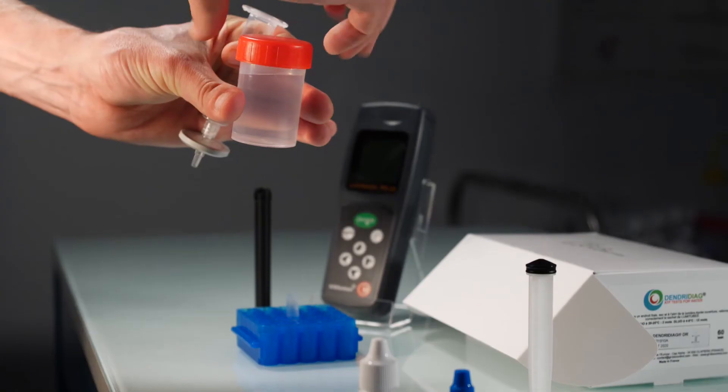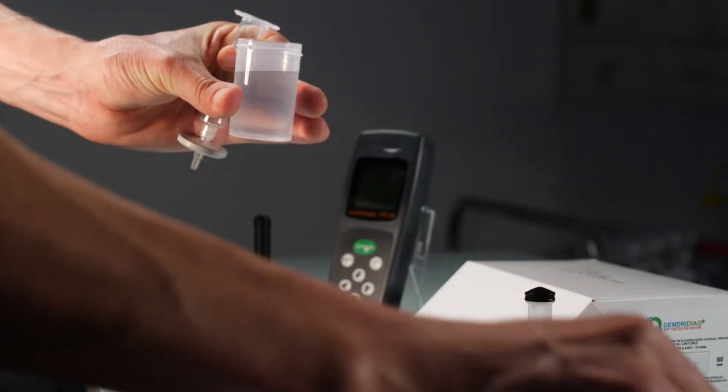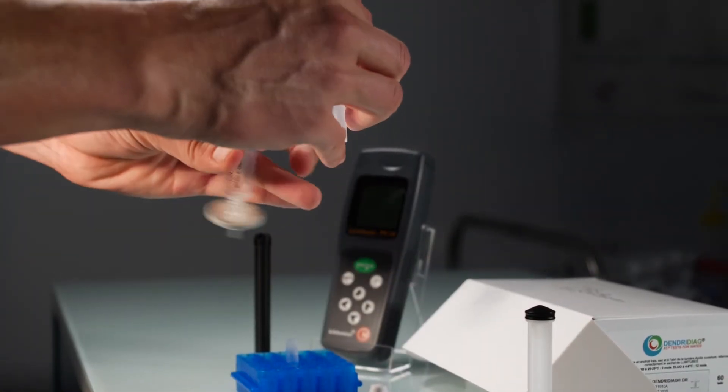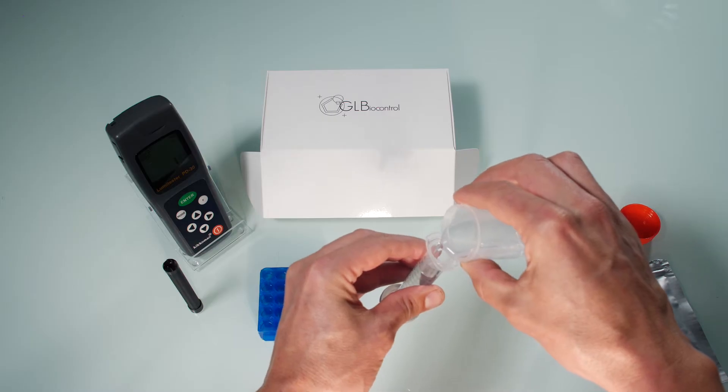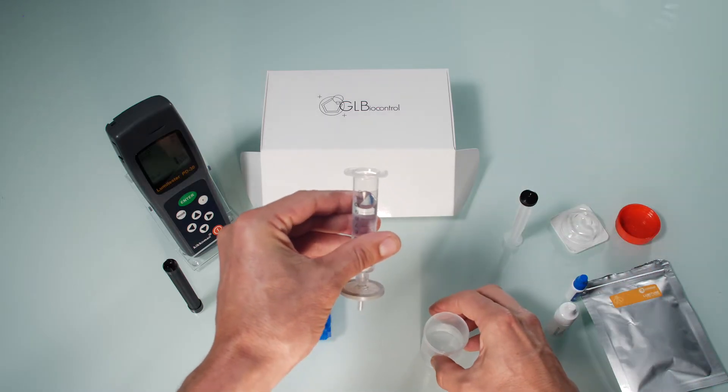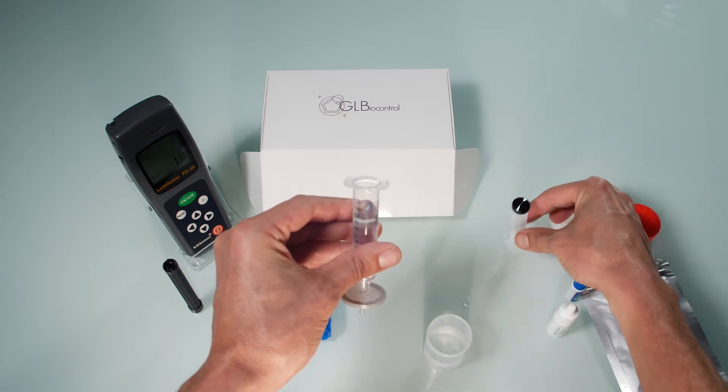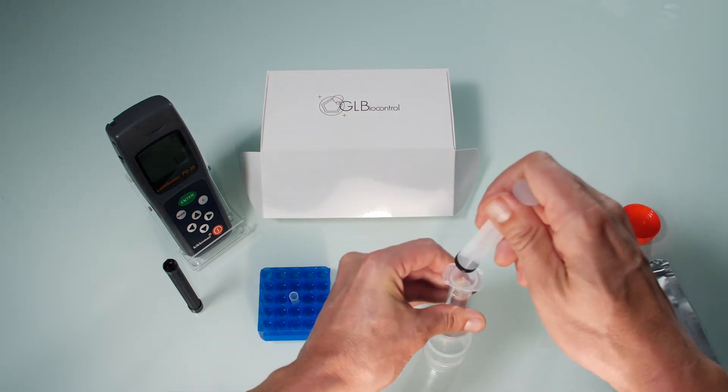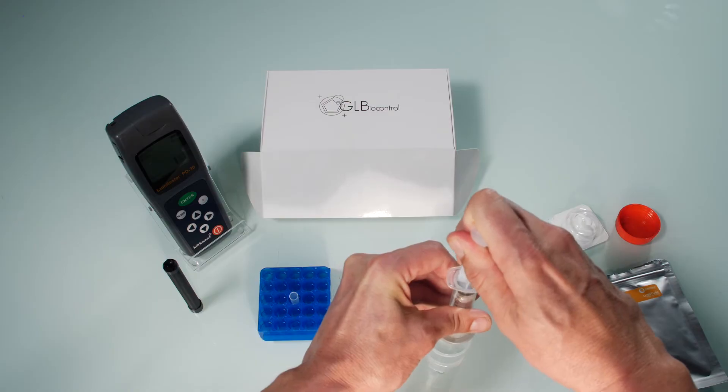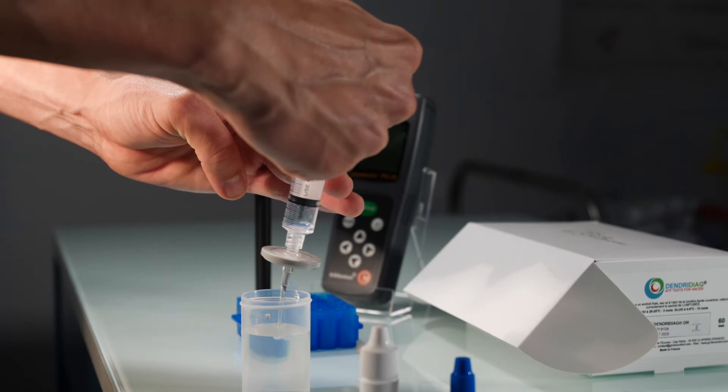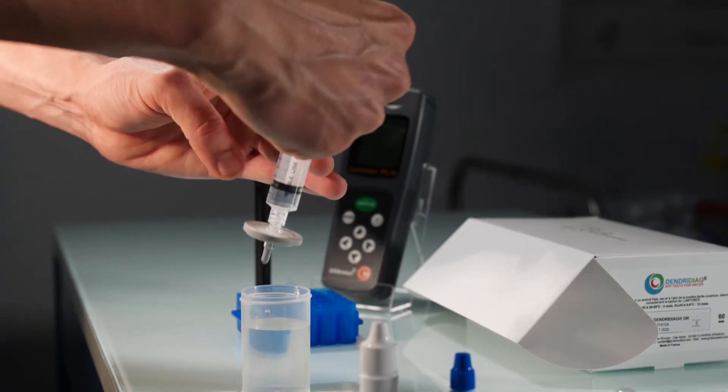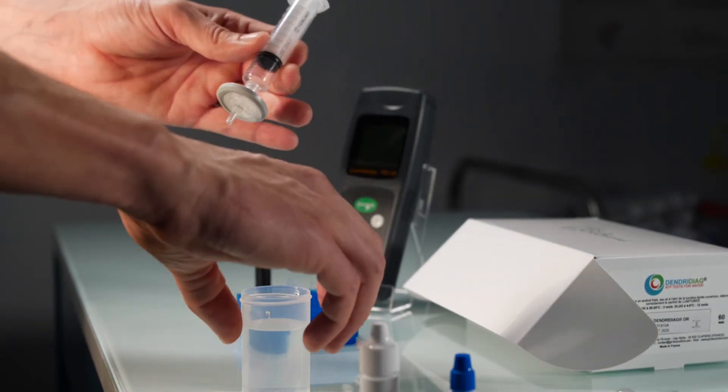Take the sample container and pour 10 milliliters into the syringe. Use the marks on the syringe to note down the exact volume. In this example 10 milliliters. Filtrate all the water sample. Be very careful not to dry the membrane by pushing to the end of the barrel. Filtration concentrates the microorganisms on the filter and removes pre-ATP.